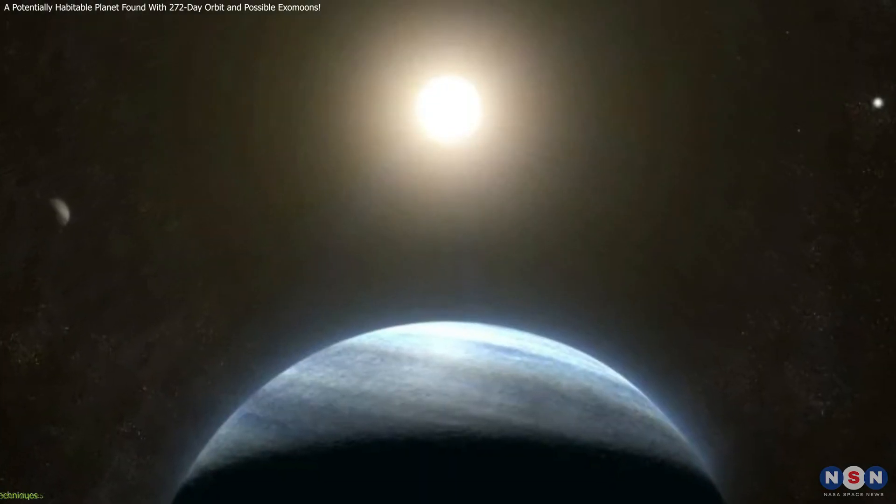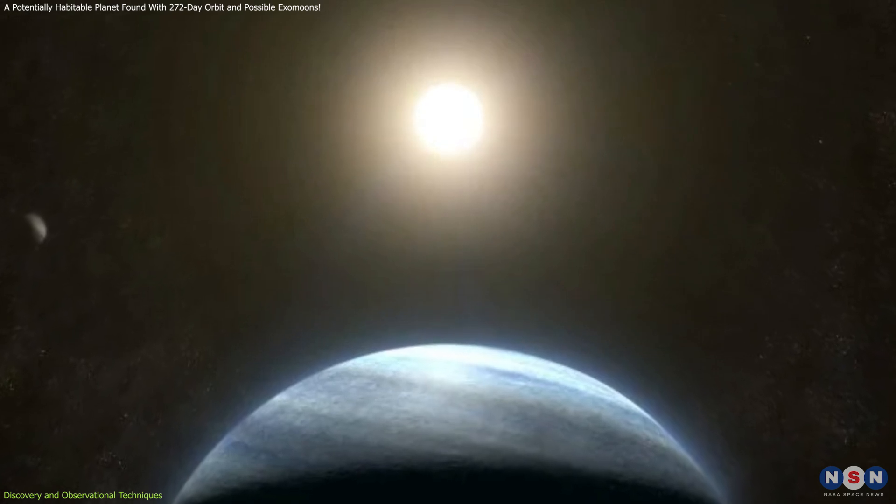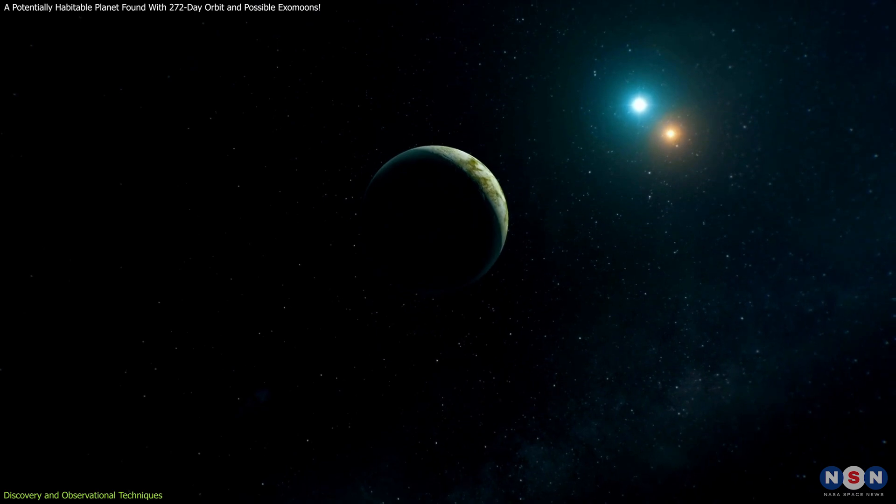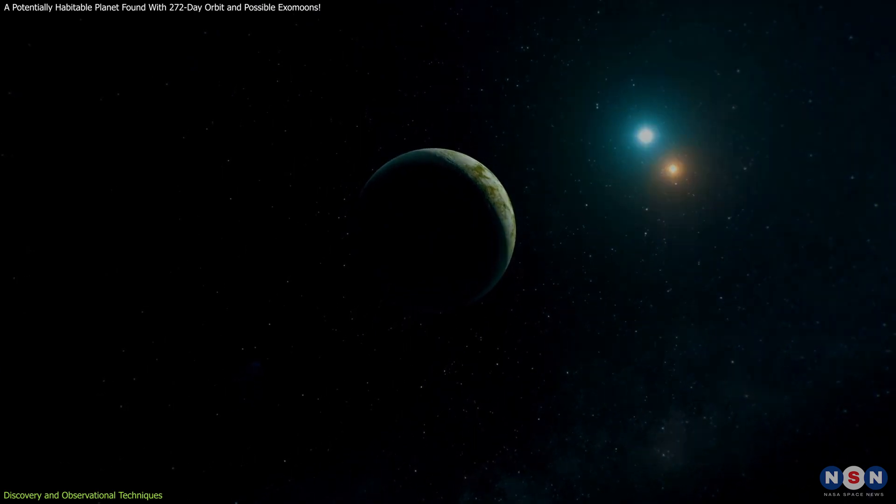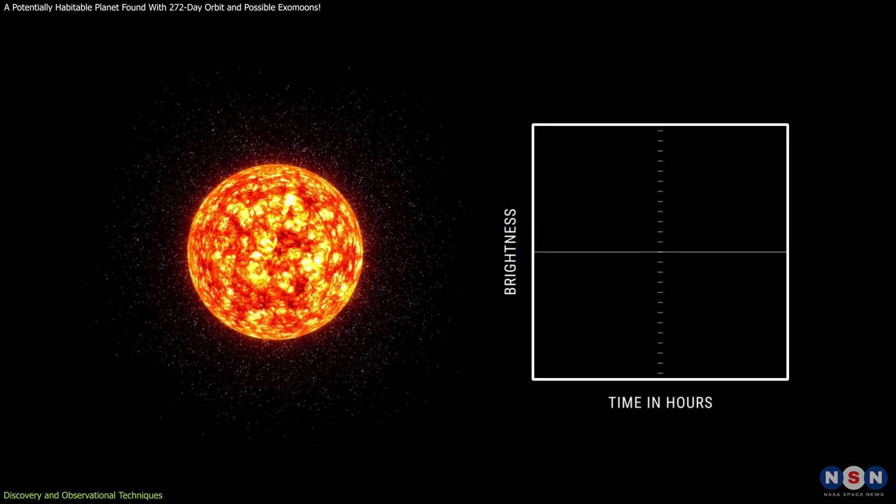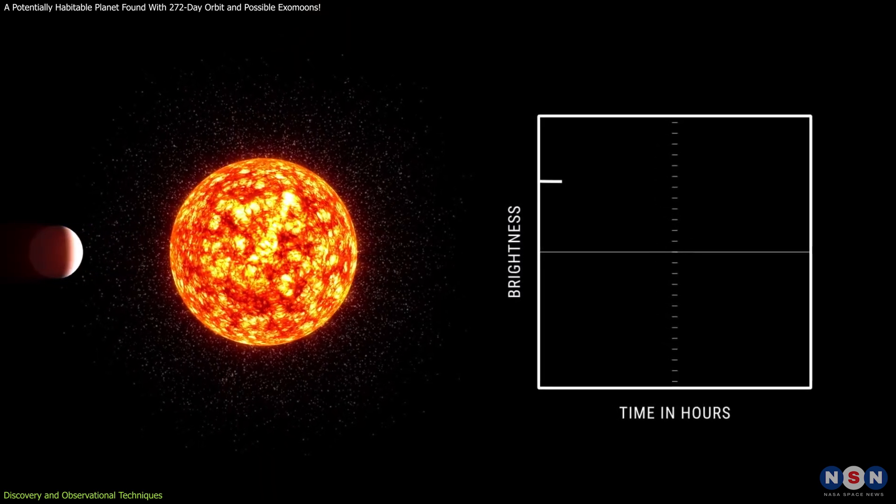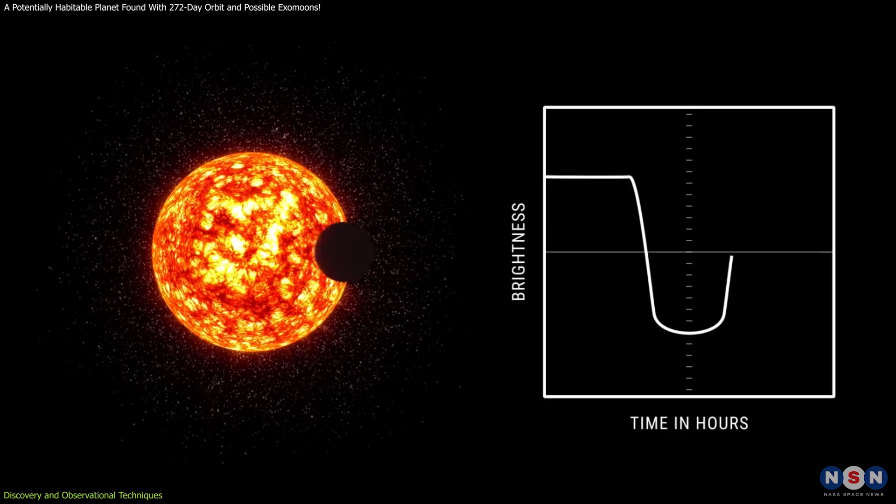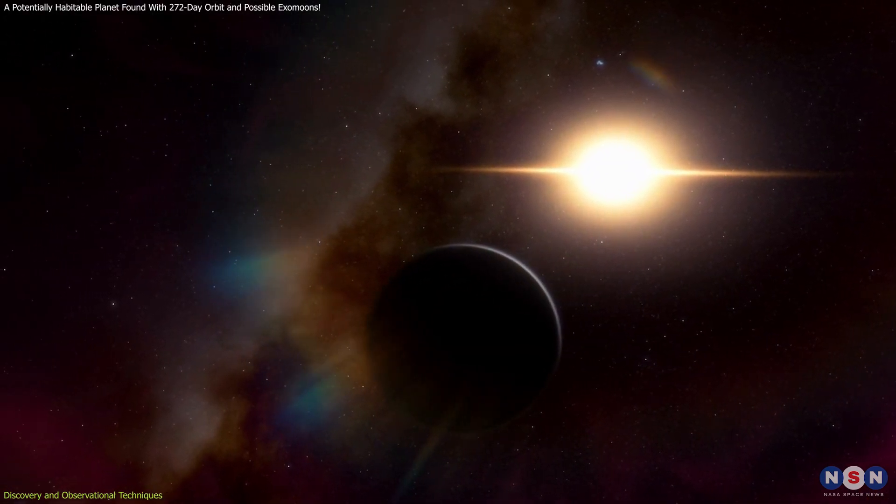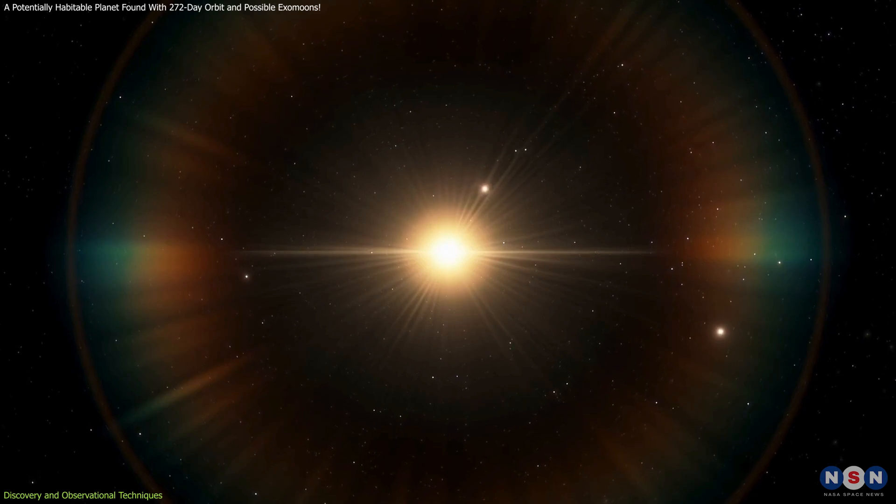The discovery of TOI 4633c represents a fascinating intersection of modern astronomy and citizen science. The process began with the use of the transit method, a technique where astronomers observe the slight dimming of a star's light as a planet passes in front of it. This method is highly effective for detecting exoplanets, particularly those with shorter orbital periods.